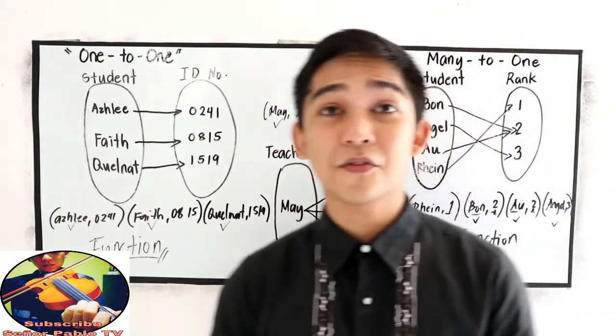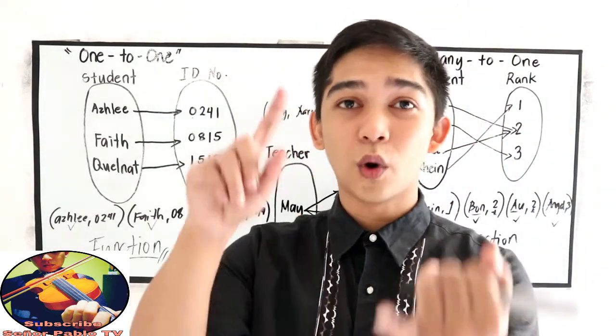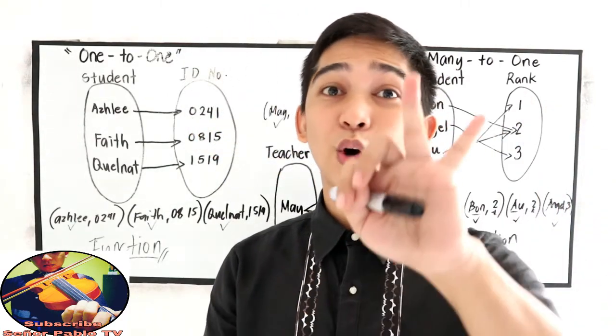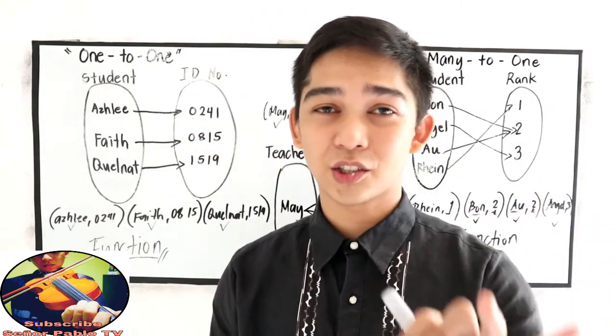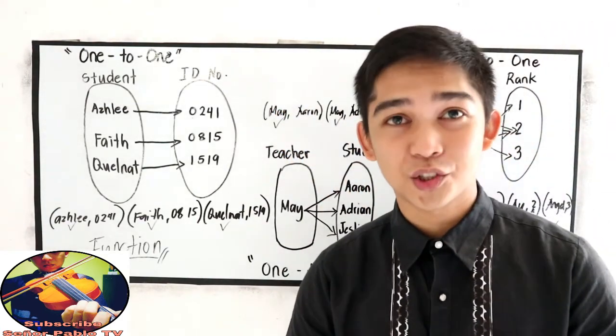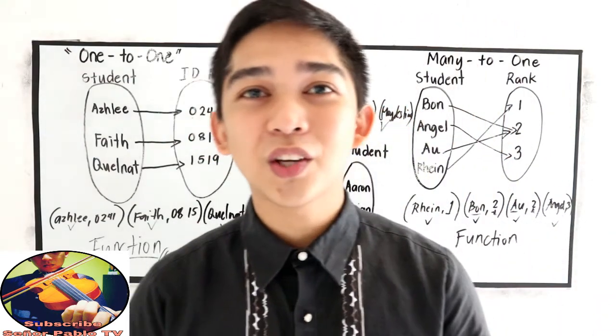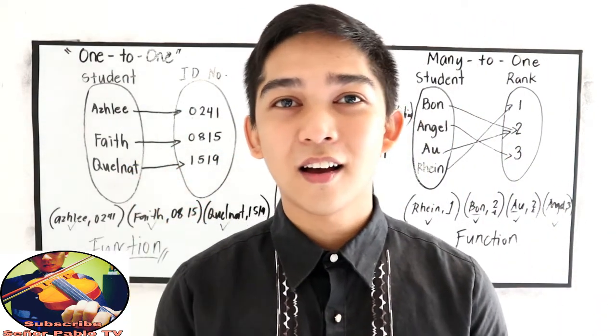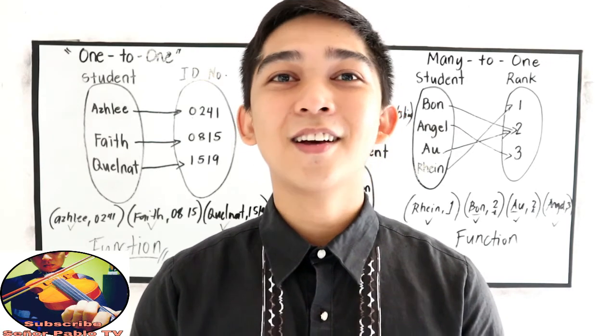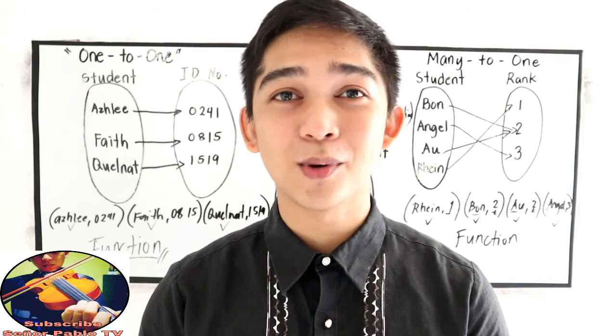Out of three classification of correspondence, one-to-one, many-to-one, those two are functions. While, one-to-one, many-to-one, is not a function. So, that is, function as, arrow diagram, or the mapping. Thank you for watching Senior Pablo TV.